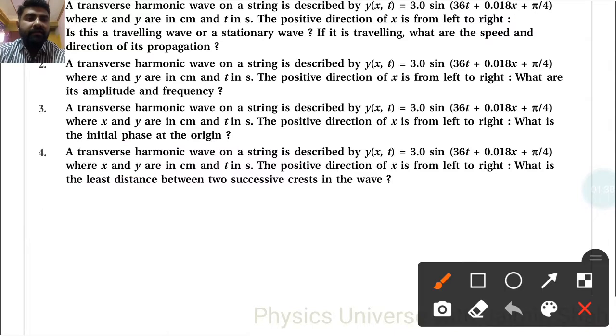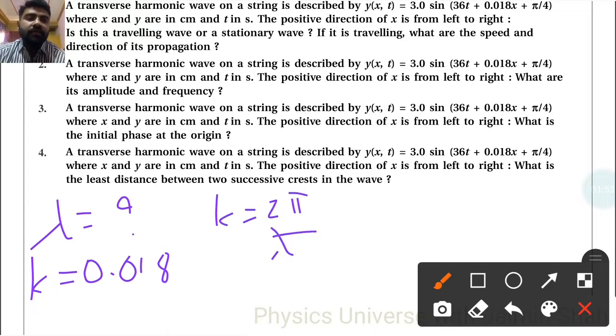And last question. What is the least distance between two successive crests in the wave? So here they ask about wavelength. To find wavelength we have to find k and k is given that is 0.018. So k simple formula is 2π upon λ. So λ subject 2 into 3.14 upon λ right.